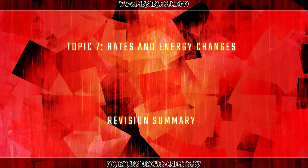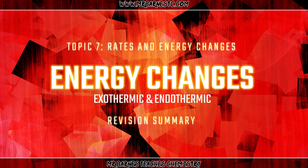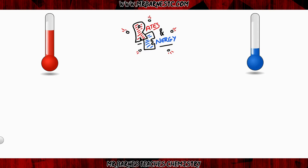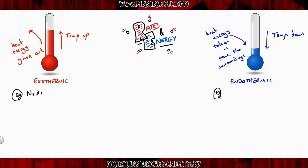We are now on to energy changes. The first part looks at exothermic and endothermic. If the temperature goes up you have an exothermic reaction; if you have an endothermic reaction the temperature goes down. For exothermic, heat energy is given out to the surroundings; for endothermic, heat energy is taken in from the surroundings. Key examples: exothermic — neutralisation and displacement; endothermic — salt dissolving. Make sure you know these for the exam.